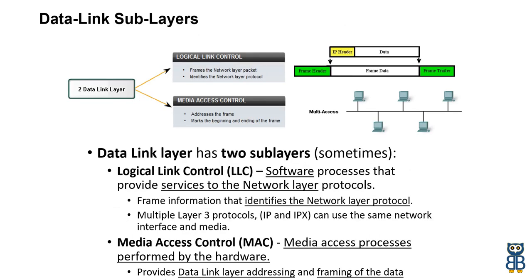The data link layer has two sub-layers. The first is Logical Link Control, or LLC. This sub-layer is responsible for identifying network layer protocols and encapsulating them when they are about to be transmitted onto the network, or decapsulating them when a packet is received and passing it up to the network layer. An LLC header tells the data link layer what to do with a packet once a frame is received. For example, a host will receive a frame and look in the LLC header to understand that the packet is destined for the IP protocol at the network layer. The LLC can also provide flow control and sequencing of control bits.